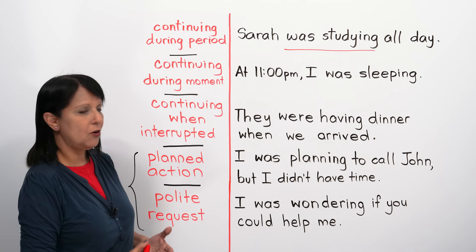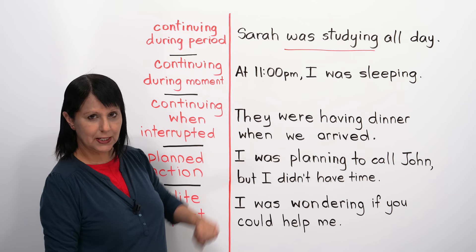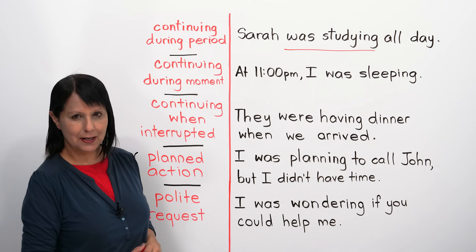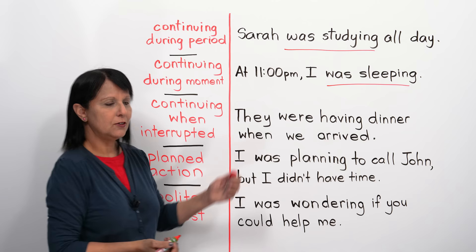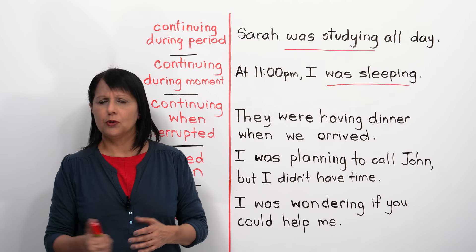We can also use this tense to talk about an action that was continuing during a particular moment in the past. For example: 'At 11pm I was sleeping.' The moment in the past is 11pm, and the past continuous is 'was sleeping.' You would say this if someone said they tried to call you last night but you didn't answer — you'd reply, 'At 11pm I was sleeping.'